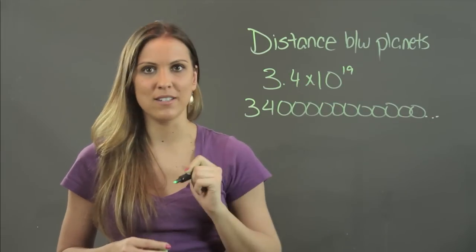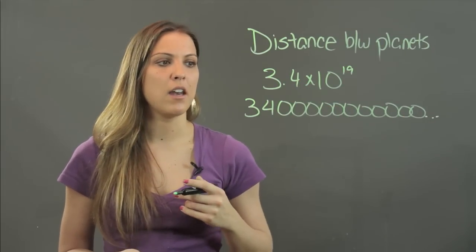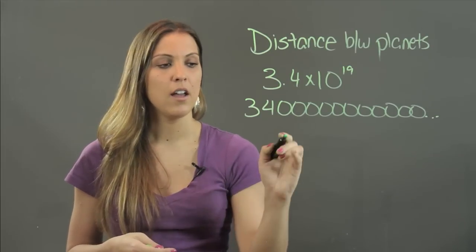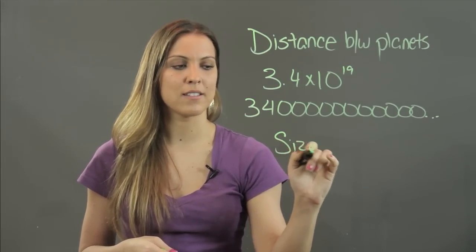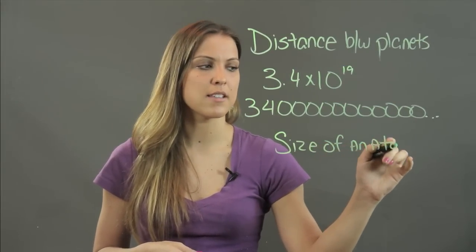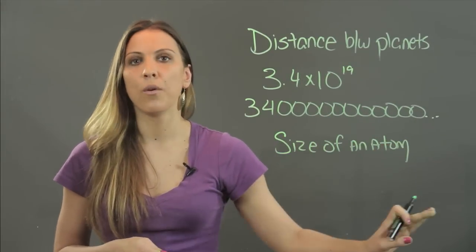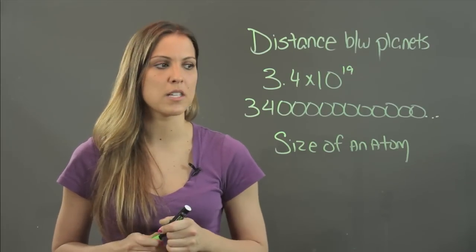On the opposite end, it can also express really small numbers more conveniently. You might be talking about things like the size of an atom. The size of an atom will be a number that's expressed the opposite of this—it'll be a decimal with a whole lot of zeros before the actual digits come in.